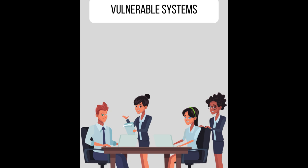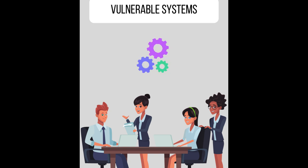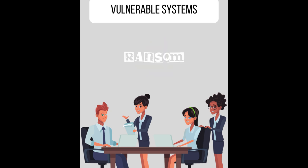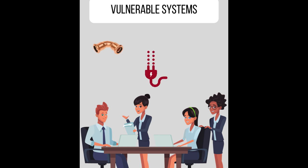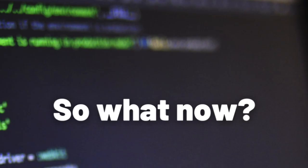Another system type is process systems, which are needed for operations. They are often part of ransomware attacks where the system is locked until money is paid. The last system type is control systems, which control physical assets such as pipelines, power grids, and traffic control.